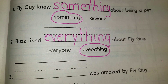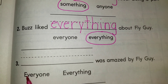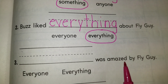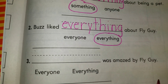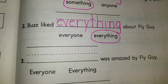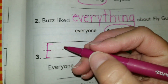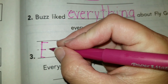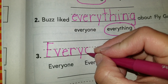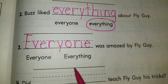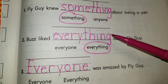Alright, so number three. Our indefinite pronoun is going to be the first word in the sentence, so it must begin with uppercase. 'Blank was amazed by Fly Guy.' Who was amazed by Fly Guy — everyone or everything? Everyone, right? He not only impressed the other animals but also the judges. So we begin with uppercase. It's going to be: 'Everyone was amazed by Fly Guy.' So far we have something, everything, and everyone.